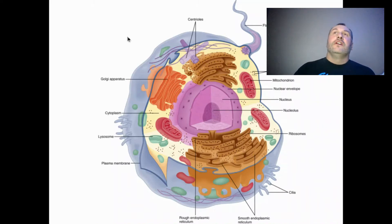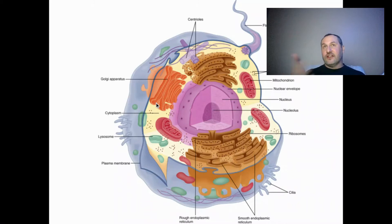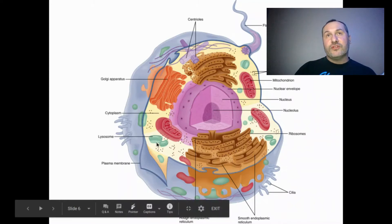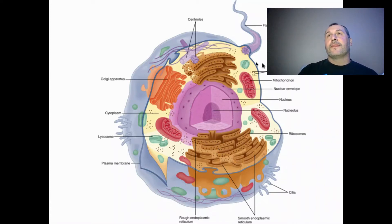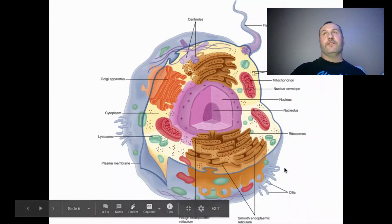Looking at the diagram: centrioles are for cell reproduction — notice how they're crossed. The Golgi apparatus is for chemical processing and packaging. Lysosomes handle breakdown of microbes. The ER allows proteins and other chemicals to pass. Mitochondria is labeled here. Cilia are shown down here — they allow the cell to move in a wave-like fashion.